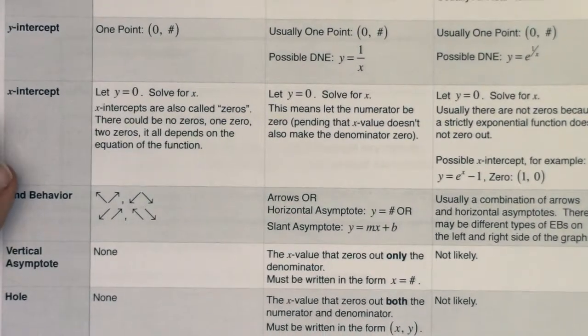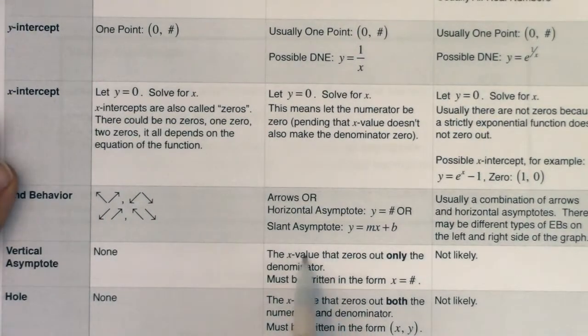All right, let me get that into view. So you see me saying here that the x value that zeros out only the denominator is where our vertical asymptote will occur, and we're going to write that equation in the form x equals a number.